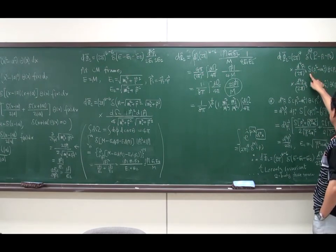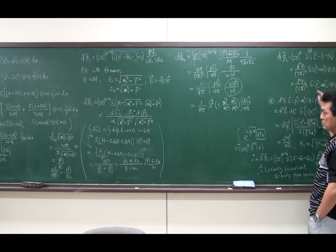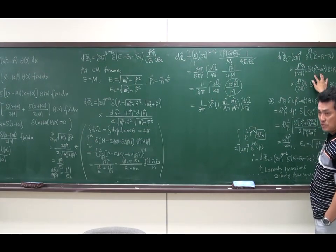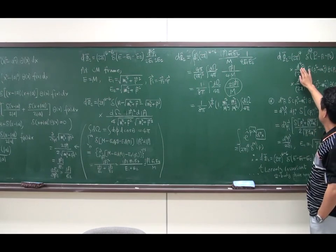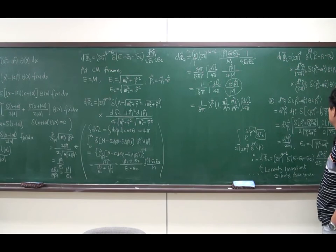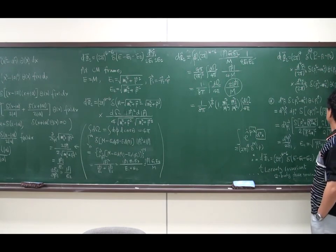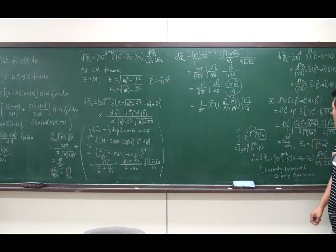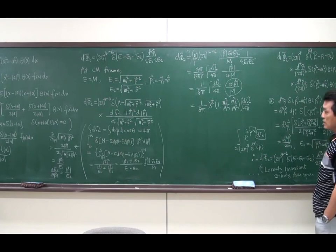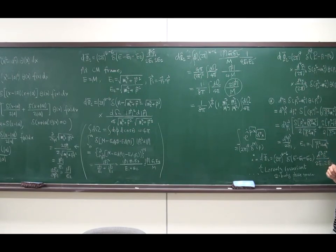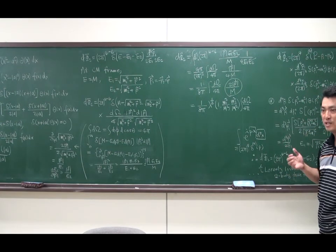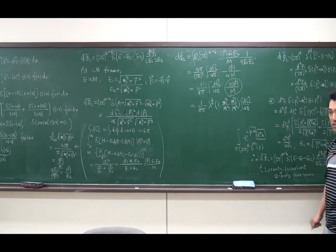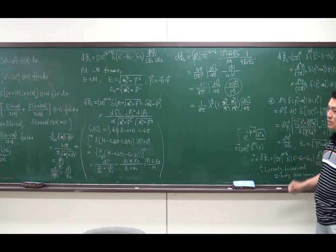This is a delta function whose argument is p squared minus m1 squared, meaning the argument itself is invariant under Lorentz transformation, so the whole object is invariant. The measures d⁴p1 and d⁴p2 are also invariant measures, and there are two theta functions. The Lorentz transformation does not flip the sign of the energy: in the rest frame the mass of a particle is positive, and if we boost the particle the absolute value of the energy increases but the sign does not change. So the whole phase-space element is invariant under Lorentz transformation.